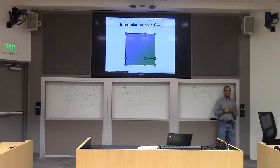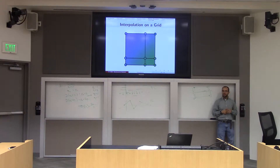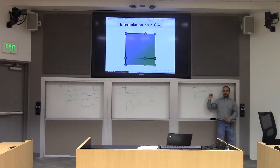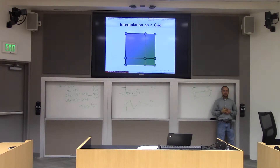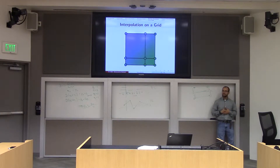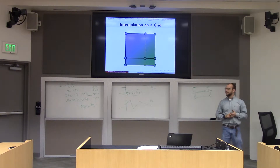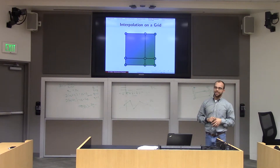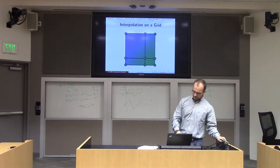Now, an important property to check when you do a grid-based interpolation scheme like this is that it doesn't matter what order you did it in. If I interpolated in X and then Y and got a different answer from interpolating in Y and then X, that would be a very bad method because it would be preferring different grid directions. But in fact, almost any strategy you can possibly write down is symmetric in X and Y.